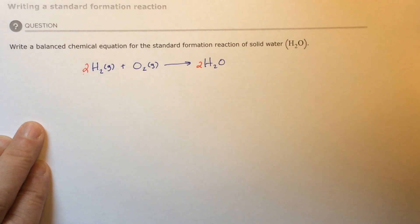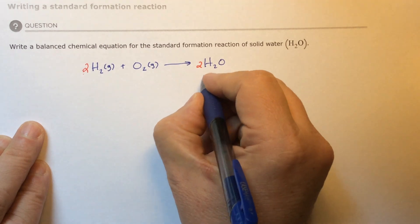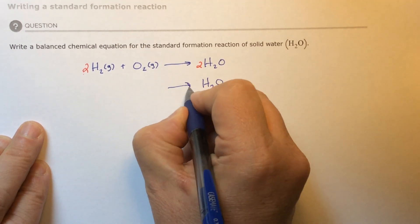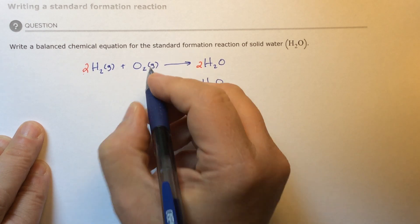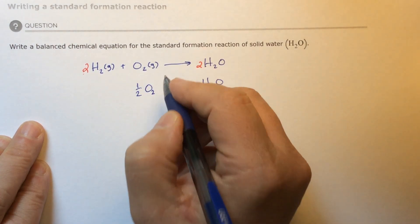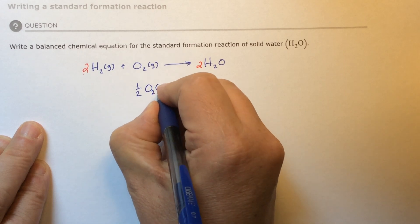All right, so that means I'm going to have H2O if I divide that by two. If I divide this by two, I'm going to have one half of a mole of O2. And that looks a little weird, and you don't usually see it.